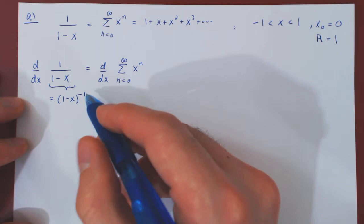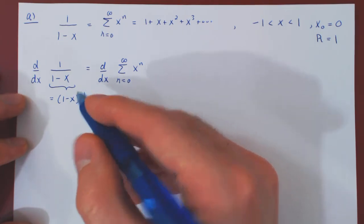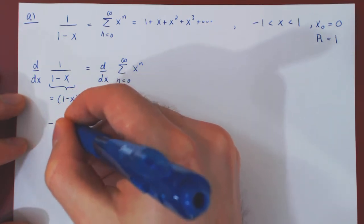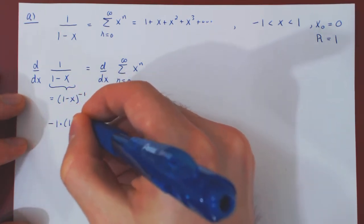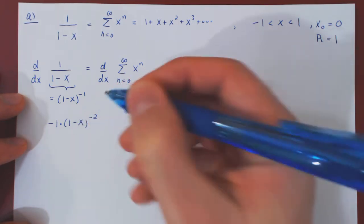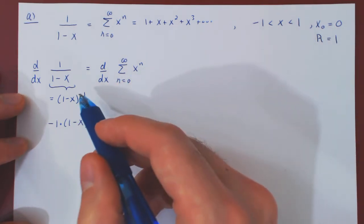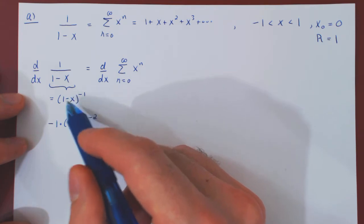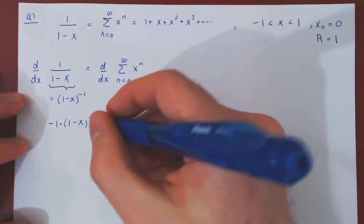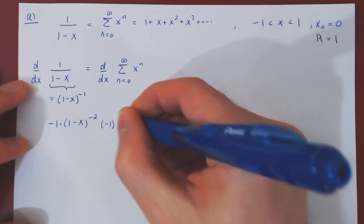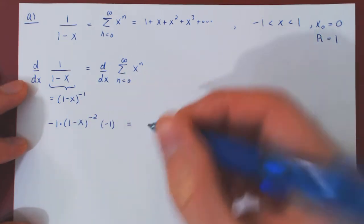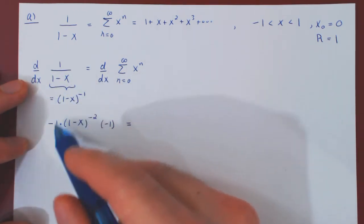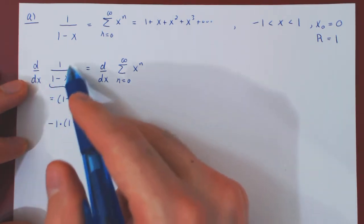Instead, think of it simply as 1 minus x to the power of negative 1. Differentiating by the power rule gives negative 1 times 1 minus x to the negative 2, and by the chain rule we multiply by the derivative of the inside, which is negative 1.